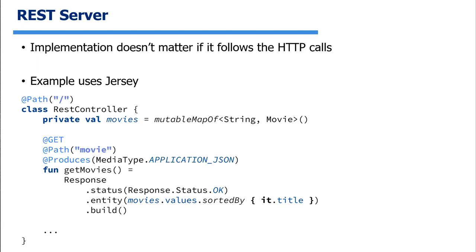Your REST server implementation doesn't really matter behind the scenes — it can be any code that respects those HTTP calls: C, C++, PHP, Python, whatever. We're going to use Jersey, which is a bit older. I think there are newer approaches that are more well-liked; eventually I want to switch to Ktor, which lets you create a server in Kotlin, but I haven't worked on that yet, so we'll stick with Jersey.